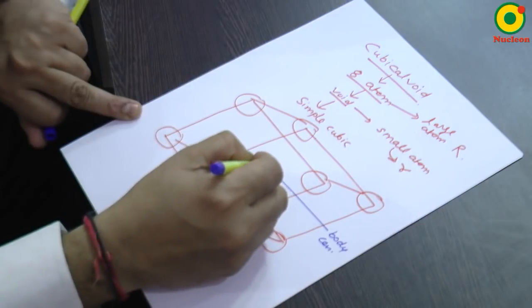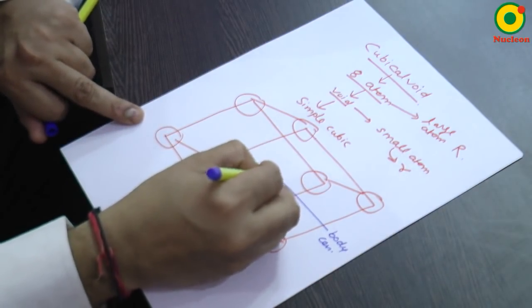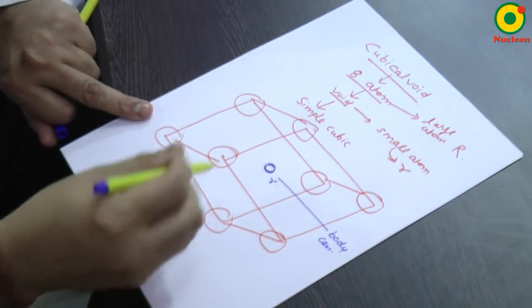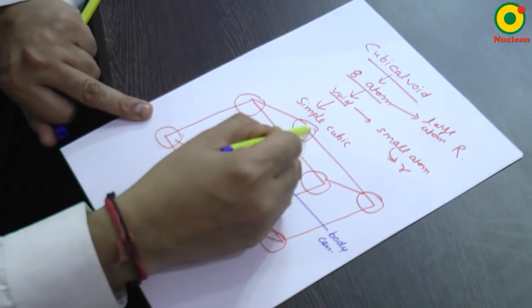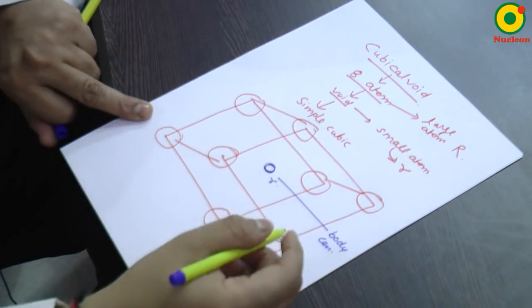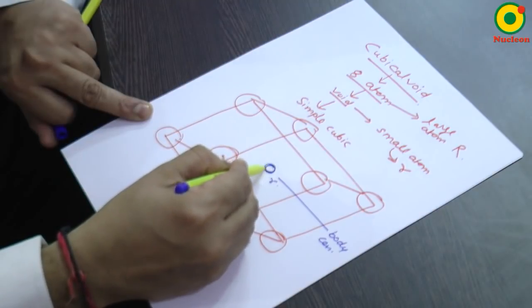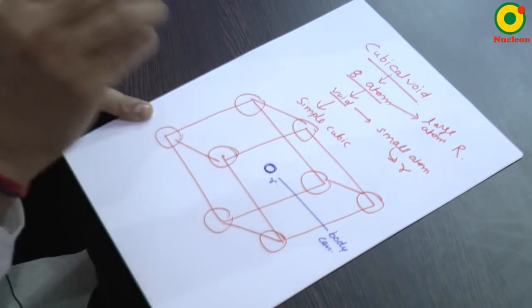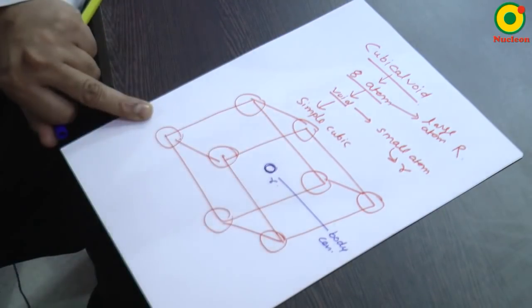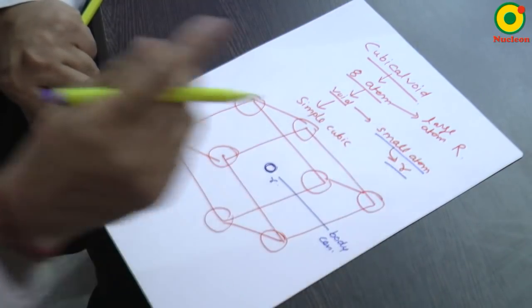And at the body center, if a void is present, we can place a small atom which is having radius r. And this small atom will touch eight atoms, four plus four. So, this is called as cubical void, this place is called as cubical void and the atom is exactly fitted in this cubical void is of a small radius, a small atom with radius small r.